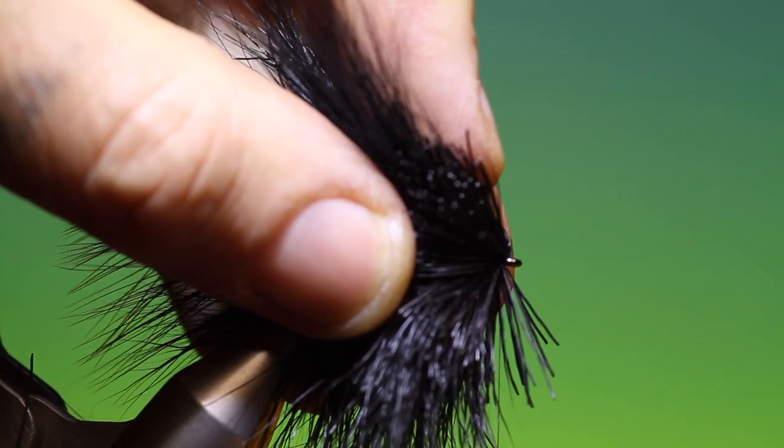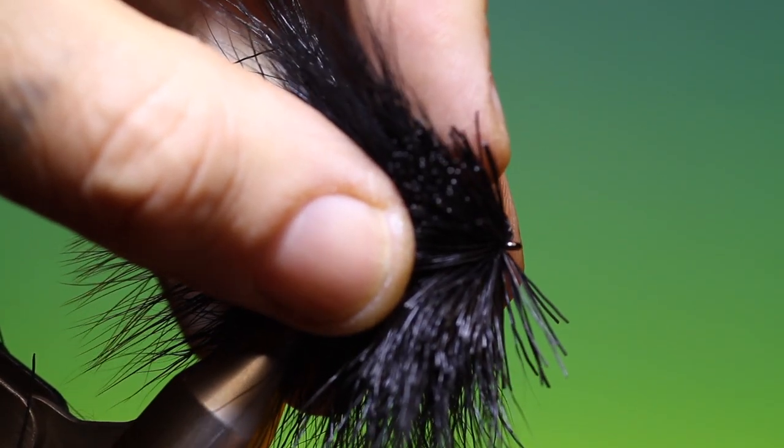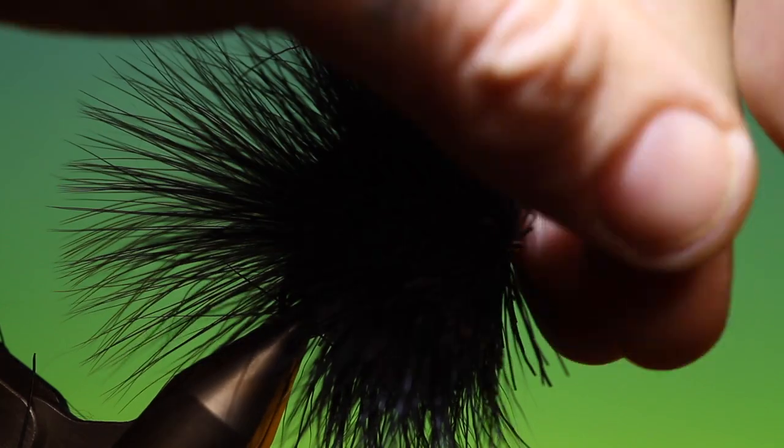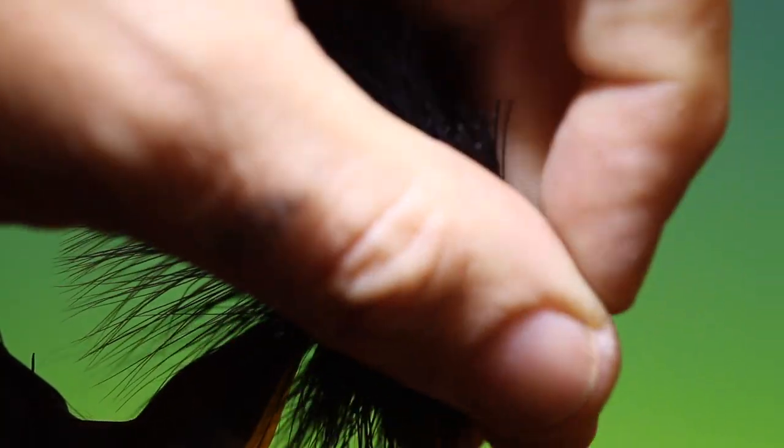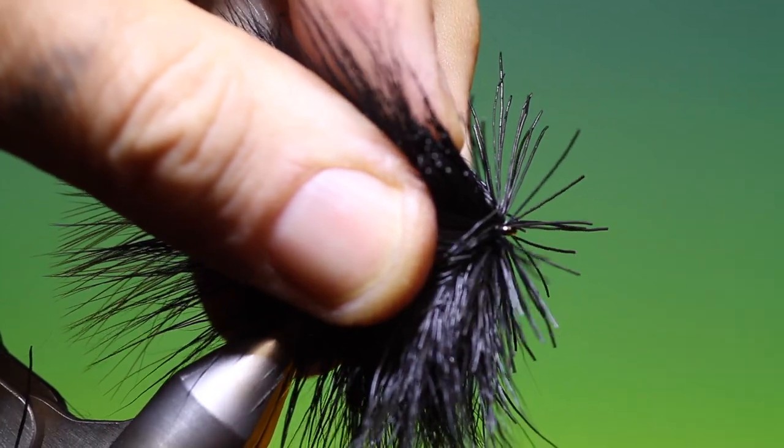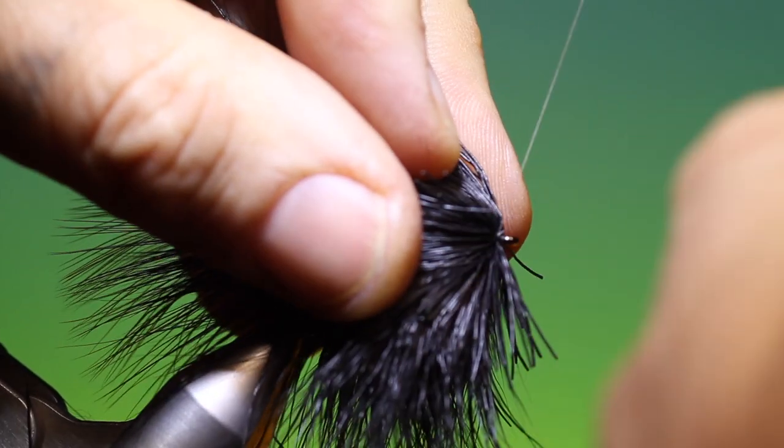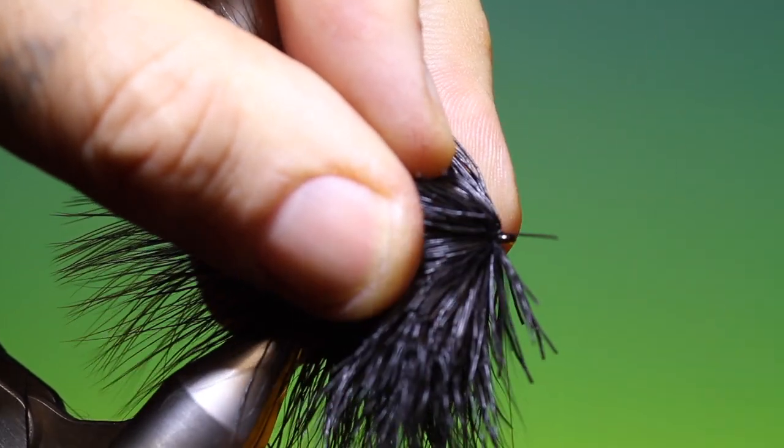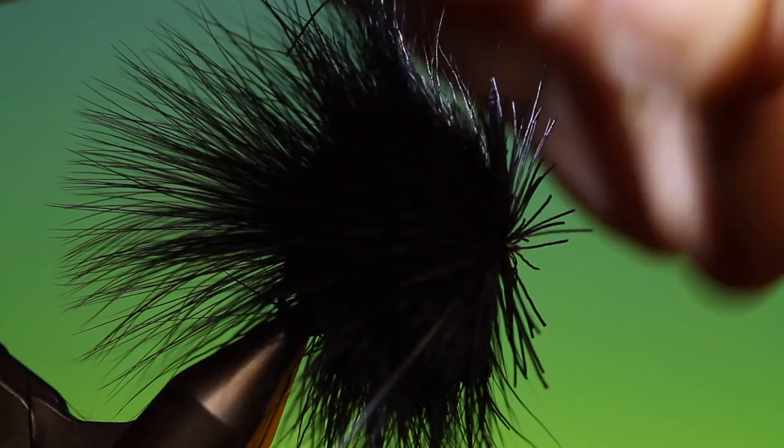And then I'll spin my tying thread clockwise to give it a round profile for the whip finish. And what that does is the round profile will cut through any hairs that are trapped at the front.